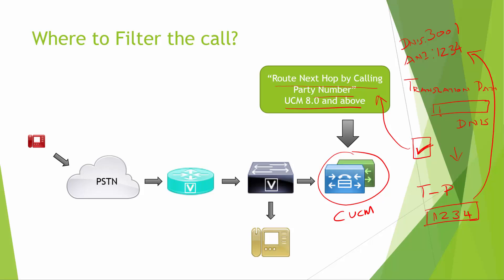Once the ANI matches — for example 1234 — we have options to either allow or block the call. If it's a malicious call we can block it, or if it needs to be directed somewhere else we can redirect it. We can also do digit manipulation to send the call to a different destination. This works well with SIP, MGCP, and H.323.